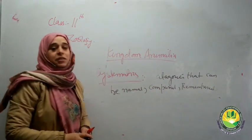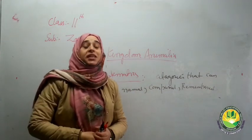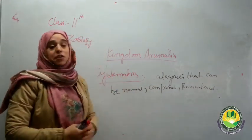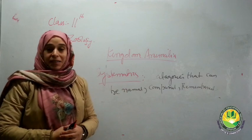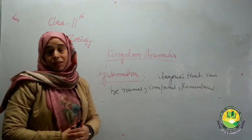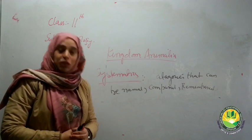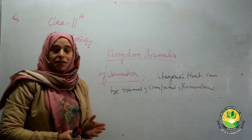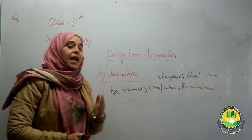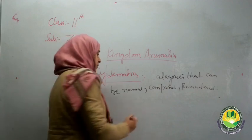Simpson, in 1961, gave a beautiful definition of systematics. According to Simpson, systematics is the branch of biology which deals with the diversity of organisms at every level of classification.